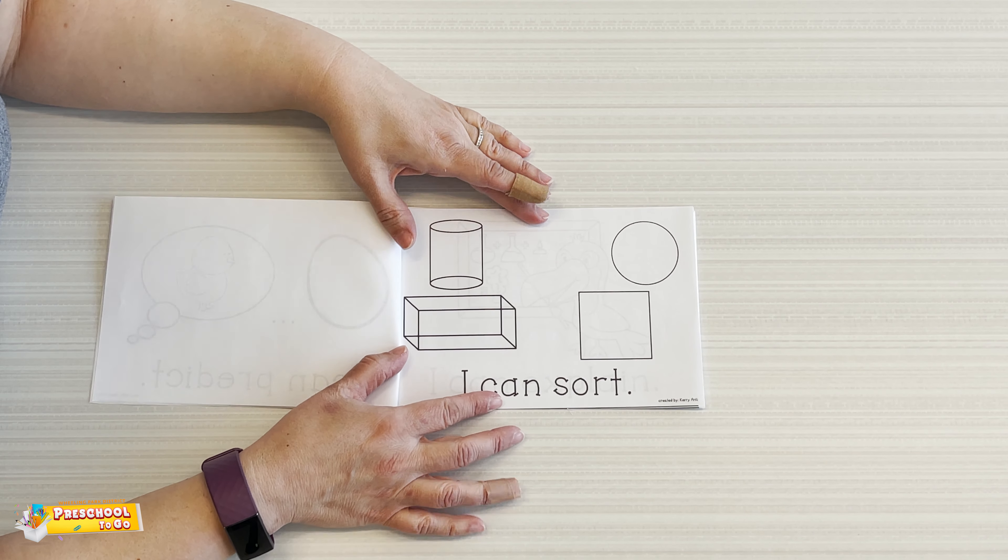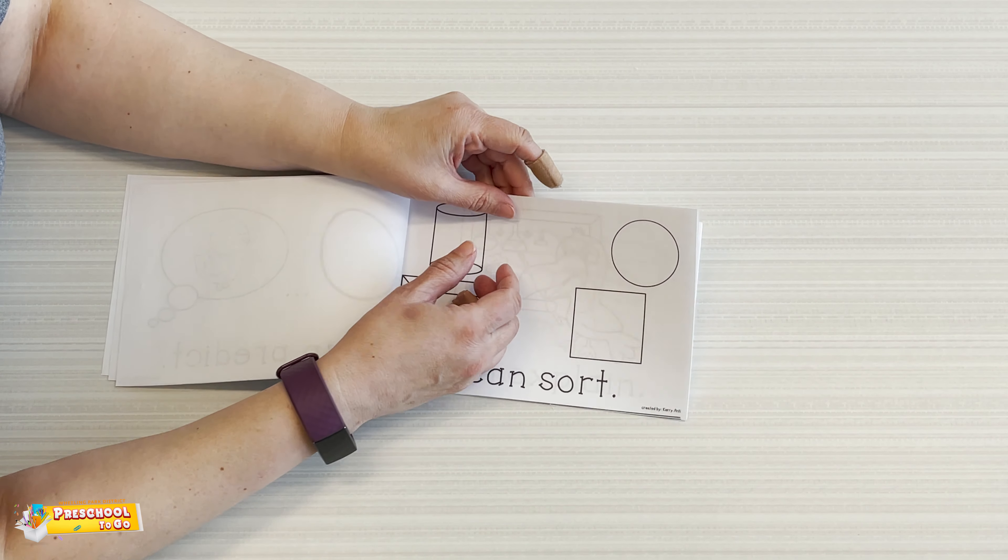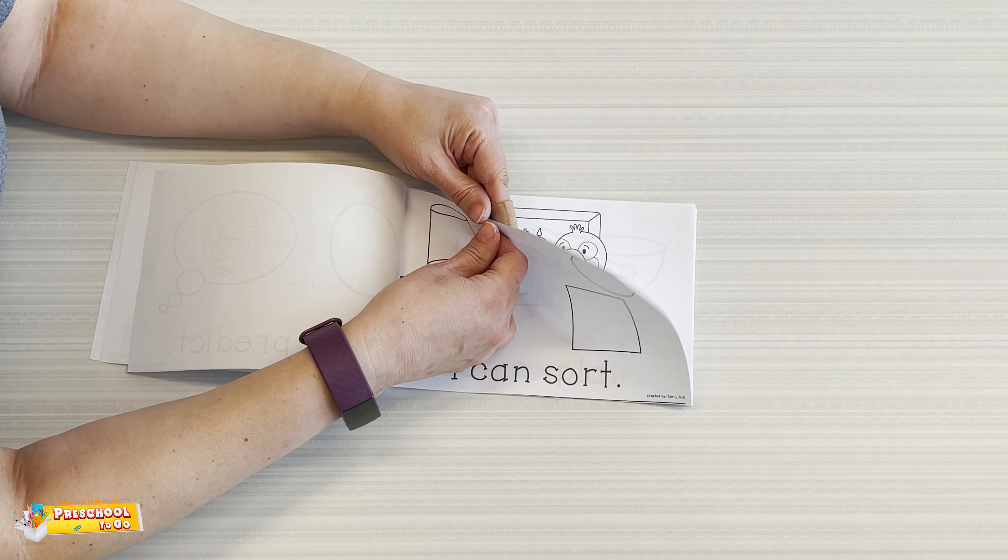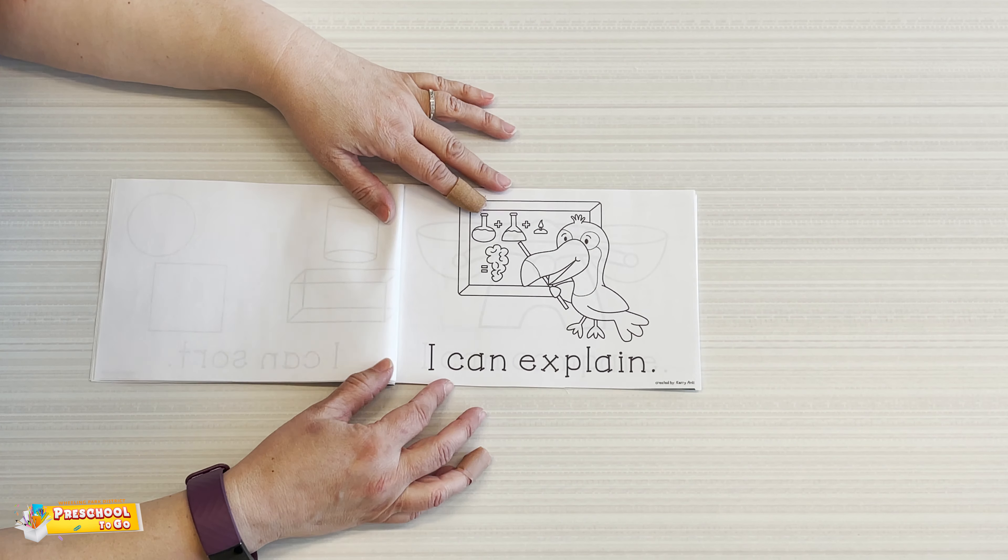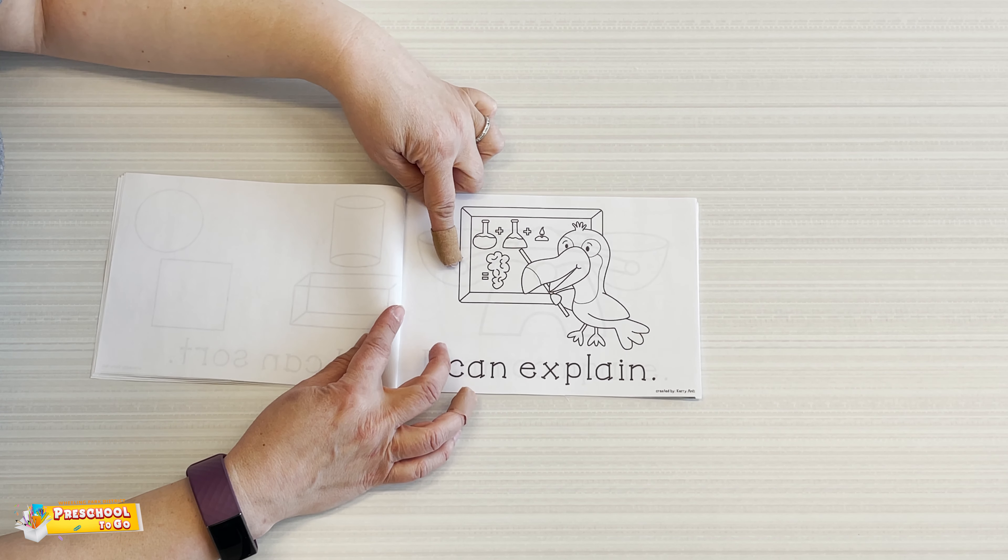I can sort, meaning different groups because these are not the same. I can explain. So I have this and this and this is how I'm going to get to this.